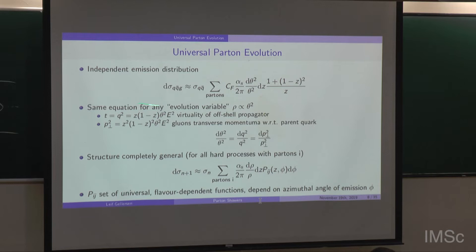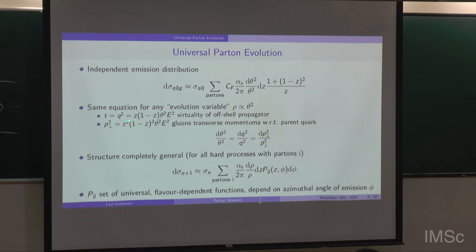We can write the factorized cross section of qqbar+gluon as the product of the qqbar cross section times the sum over all partons that can radiate, with individual splitting functions. Here theta turns out to be the evolution variable in which parton showers operate — but this is not unique. In general we call it ρ, and popular choices are the virtuality of an off-shell propagator, defined as z(1-z)θ²E², or the transverse momentum, z²(1-z)²θ²E². The differential d ln θ or d ln q² are the same, which is why these equations work for different ordering variables.